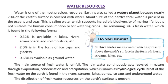Out of this 3% fresh water, only 0.32% is available in lakes, rivers, and atmospheric and soil moisture. About 2% is in the form of ice caps and glaciers in the Himalayas, Antarctica, and Greenland — this water is not available for immediate consumption, as it is either in ice caps or in the form of ice sheets. The remaining 0.68% is available as groundwater, which can be extracted through hand pumps, tube wells, etc.